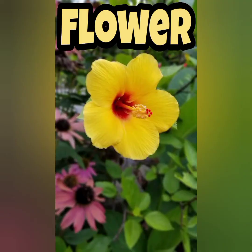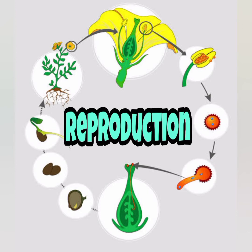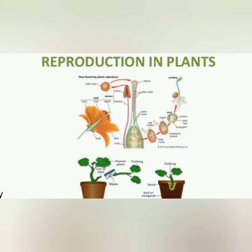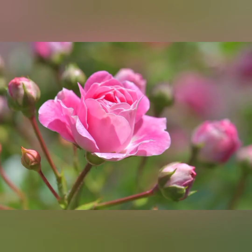Today we will learn the next part of a plant, that is the flower. It is the most important and attractive part of the plant. It is the reproductive part of a plant. That means producing young ones of their own plant. It helps the plant to produce more of its kind, and for this reason it is the most important part of a plant.